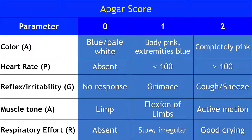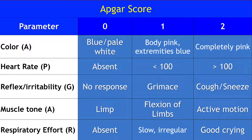This table shows the APGAR score in detail. Each parameter is scored from 0 to 2. The higher the score, the better the baby is doing. Remember, it is rare to get a perfect score of 10 in a healthy baby because most newborns have acrocyanosis — that is, their body is pink but the extremities are still blue even if they are healthy. A score of 7 indicates a healthy newborn, whereas a score less than 7 indicates some degree of neonatal asphyxia.